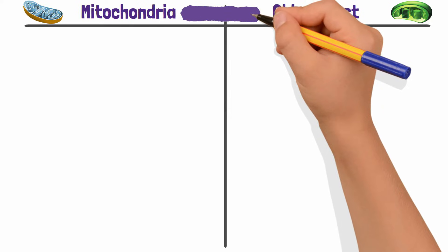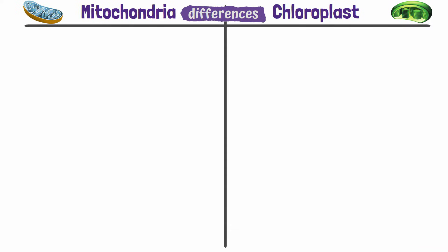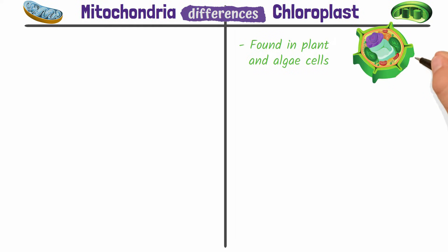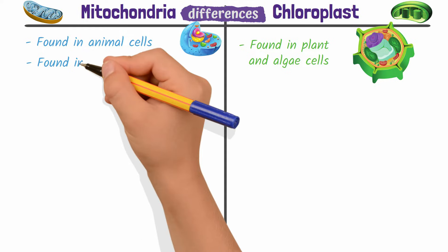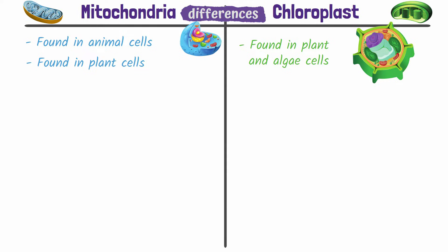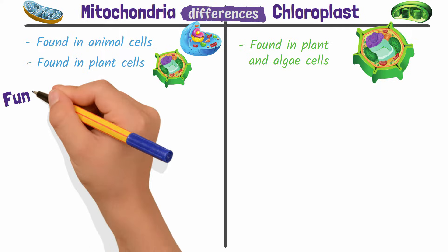Let's start with the differences. You're probably aware that chloroplasts are found in plant and algae cells and mitochondria are found in animal cells. This is true. But did you also know that mitochondria are found in nearly every plant cell because plants need energy too? Which brings us to our next difference: their function.